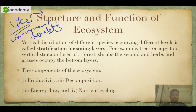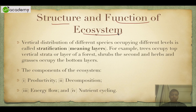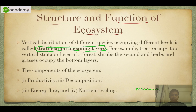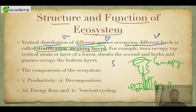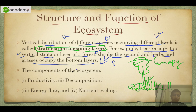In this video I'll be dealing with the structure and function of ecosystems. First, what is stratification? If we have grasses in a forest, then small shrubs, then bigger herbs or small plants, and then huge trees — you can see one, two, three, and four layers being formed. The top layer is called the canopy of the forest. The other layers form what is called stratification, that is layering. The vertical distribution of different species occupying different levels is called stratification. Trees occupy the top strata, shrubs the second, herbs the third, and grasses the bottom layers.